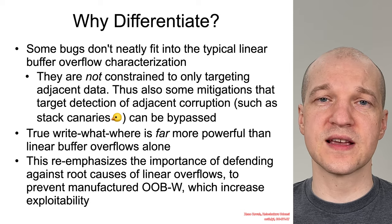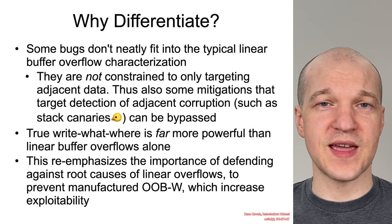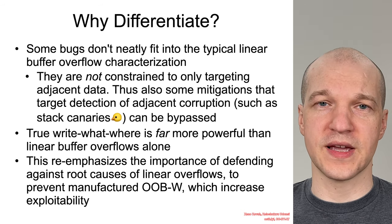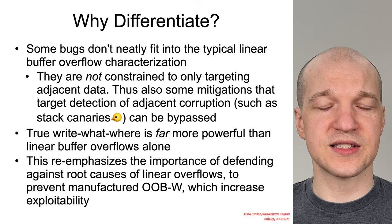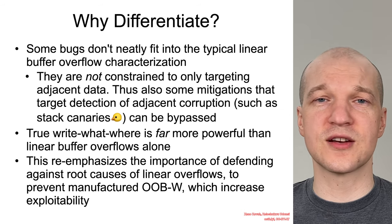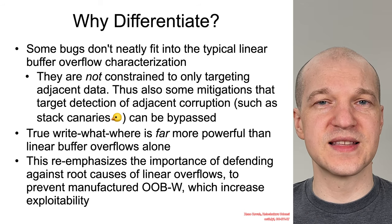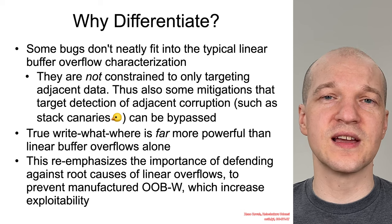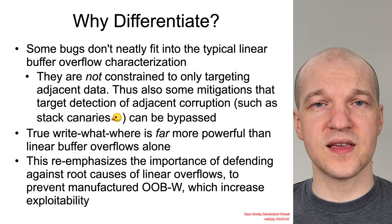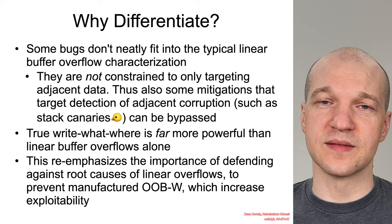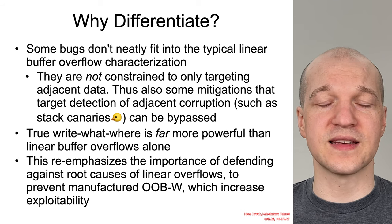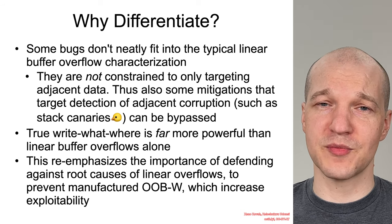This puts a lot of power in the attacker's hands. A manufactured out-of-bound write starts as some other vulnerability class — a heap overflow, a linear stack overflow, et cetera. That's why it's important to close down those other primitives, even if you think the mitigation will save you because you have a stack canary. It all depends extremely much on the very specific nature of what data is adjacent to a linear buffer overflow. By closing down the weaker primitive of a linear buffer overflow, you can in some cases close down these manufactured write-what-where primitives that would otherwise give an extremely powerful capability to the attacker.